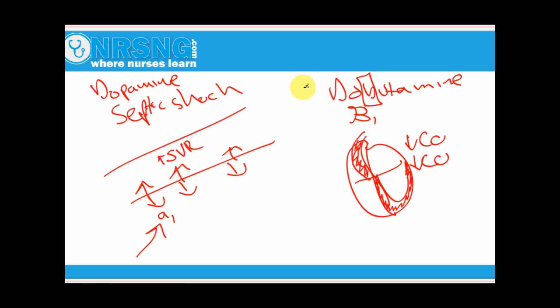That's why dobutamine and dopamine are given in different situations. The best way to remember it is dobutamine B, beta, beta-1 receptors are in the heart. Dopamine, it's a vasopressor, works on the alpha-1 receptors.